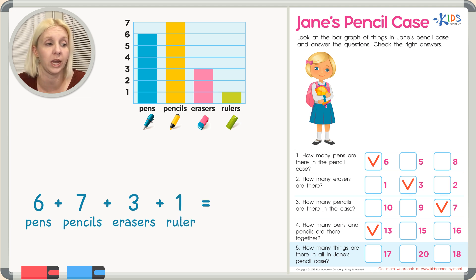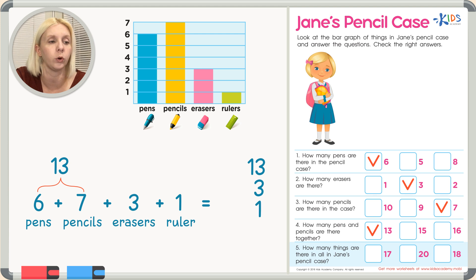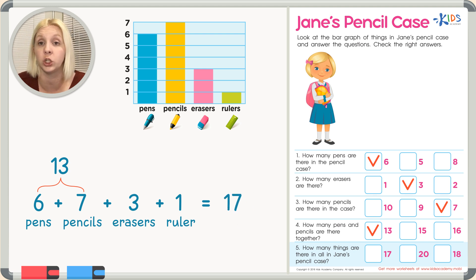So we're going to add all these numbers together. Pens plus pencils: six plus seven equals thirteen. Then we add three plus one. Writing it out: thirteen plus three plus one — three plus three is six, plus one is seven, then bring down the one — gives us seventeen. That's how many things are in all in Jane's pencil case. The answer is 17.